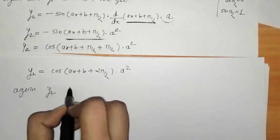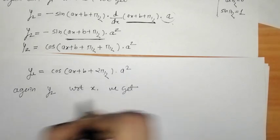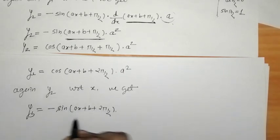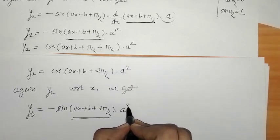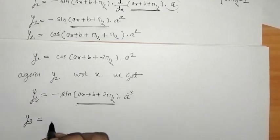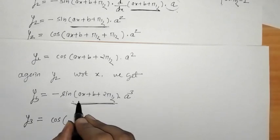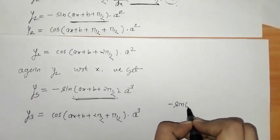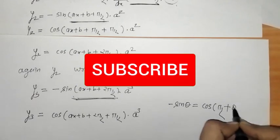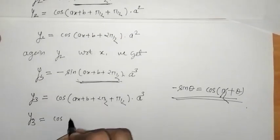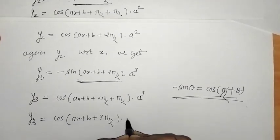Again differentiating y2 with respect to x we get y3 = -sin(ax + b + 2π/2) · a · a² = -sin(ax + b + 2π/2) · a³. Again we write minus sin in terms of cos using the identity, treating the complete bracket as θ. So y3 = cos(ax + b + 2π/2 + π/2) · a³ = cos(ax + b + 3π/2) · a³.